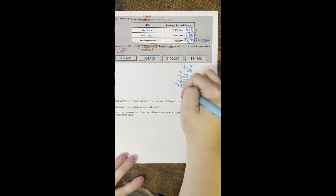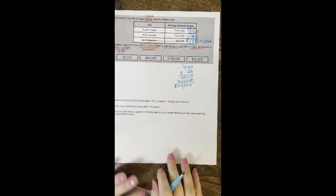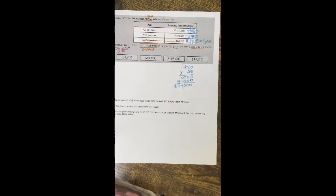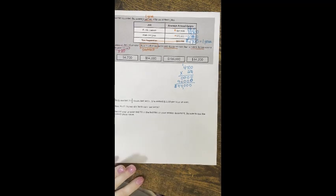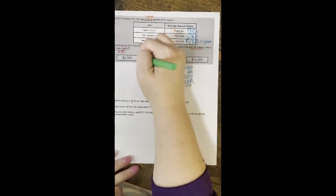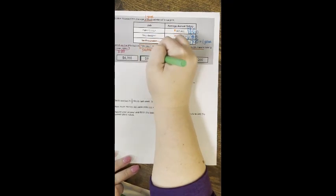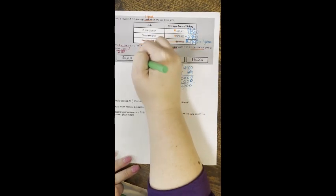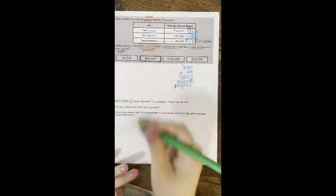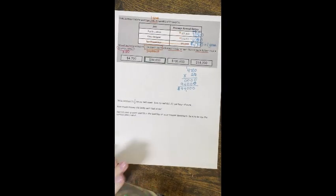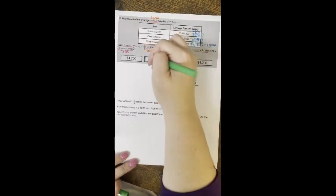So over a 20 year career, a public liaison and a web designer will have a salary difference of $94,000. It's over 20 years.